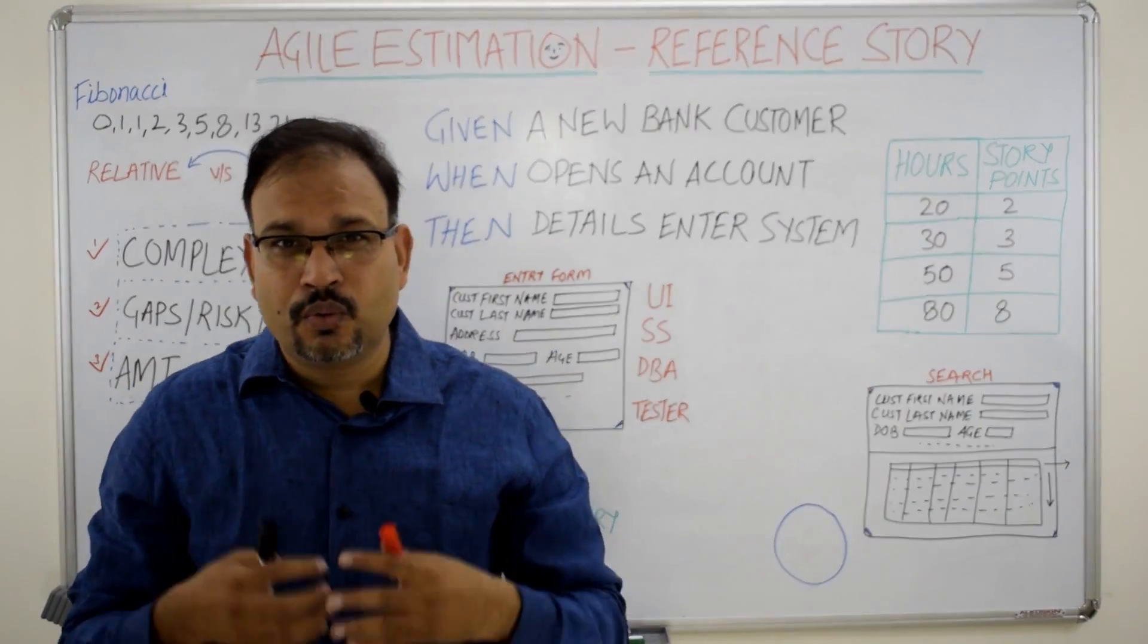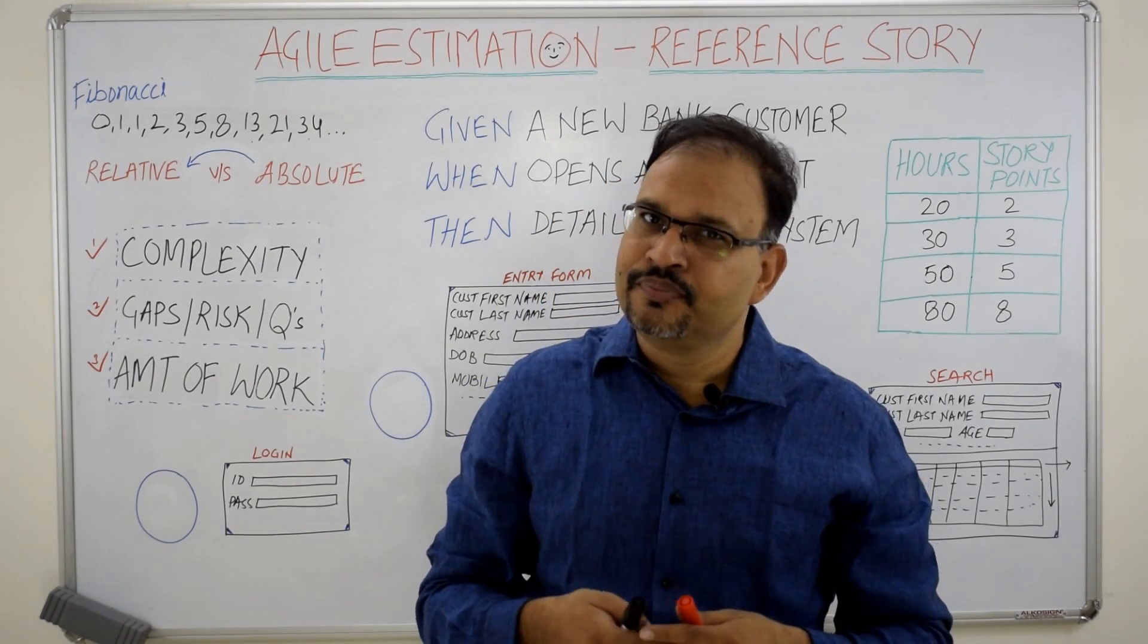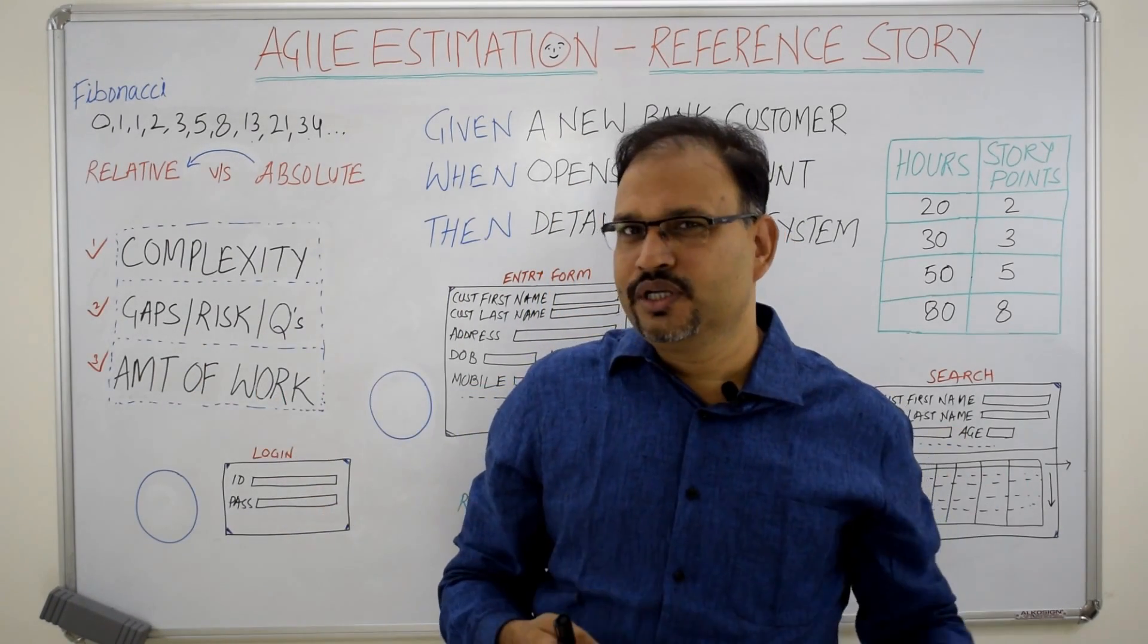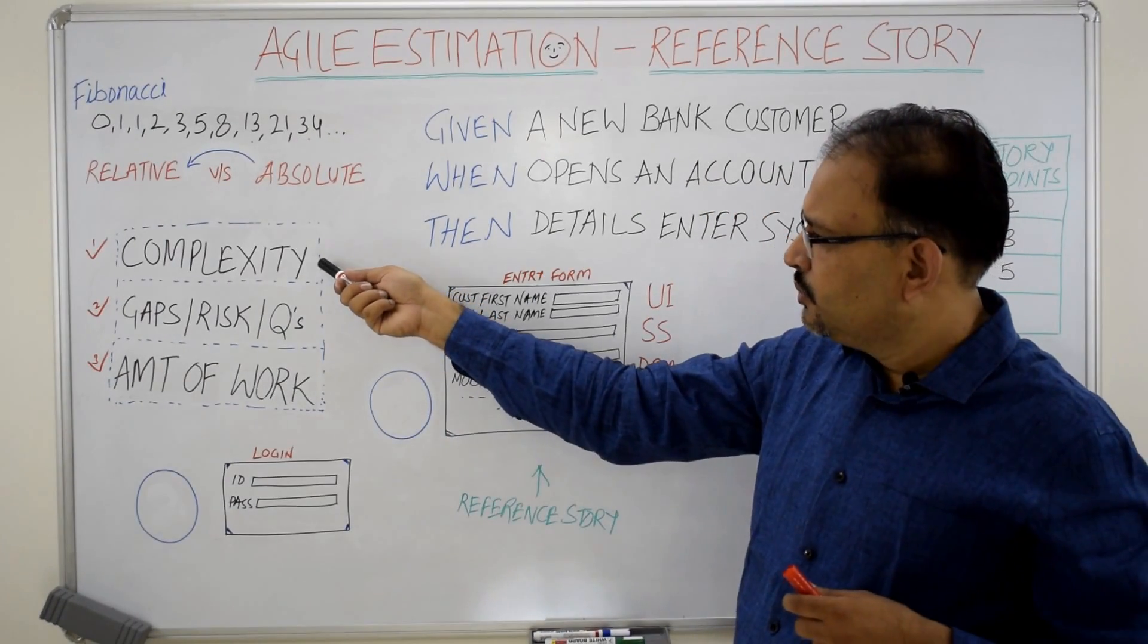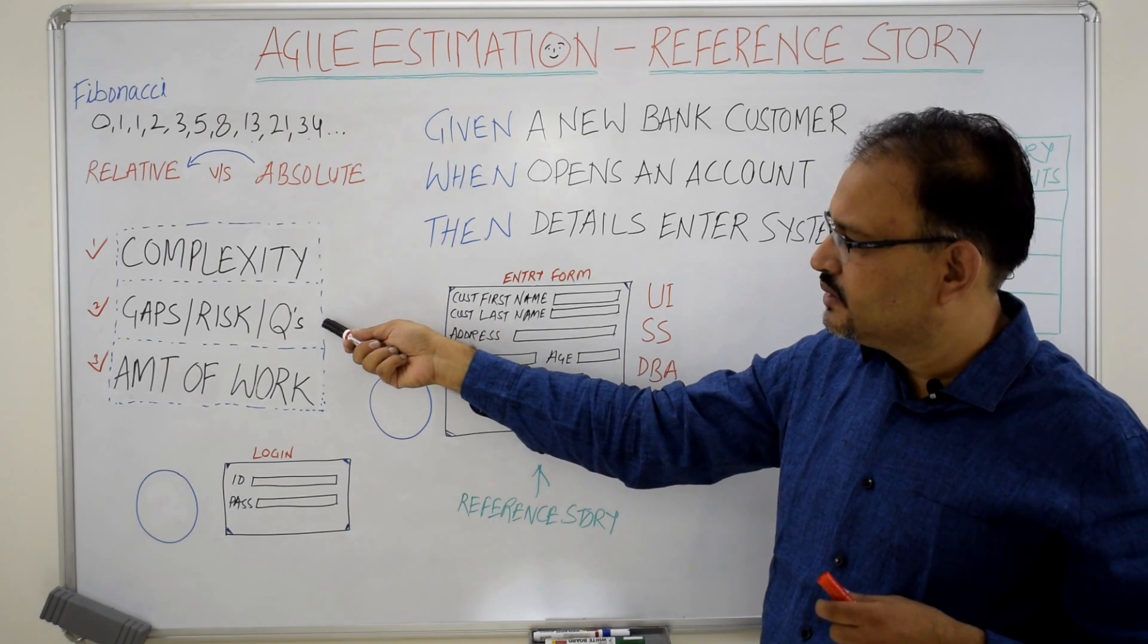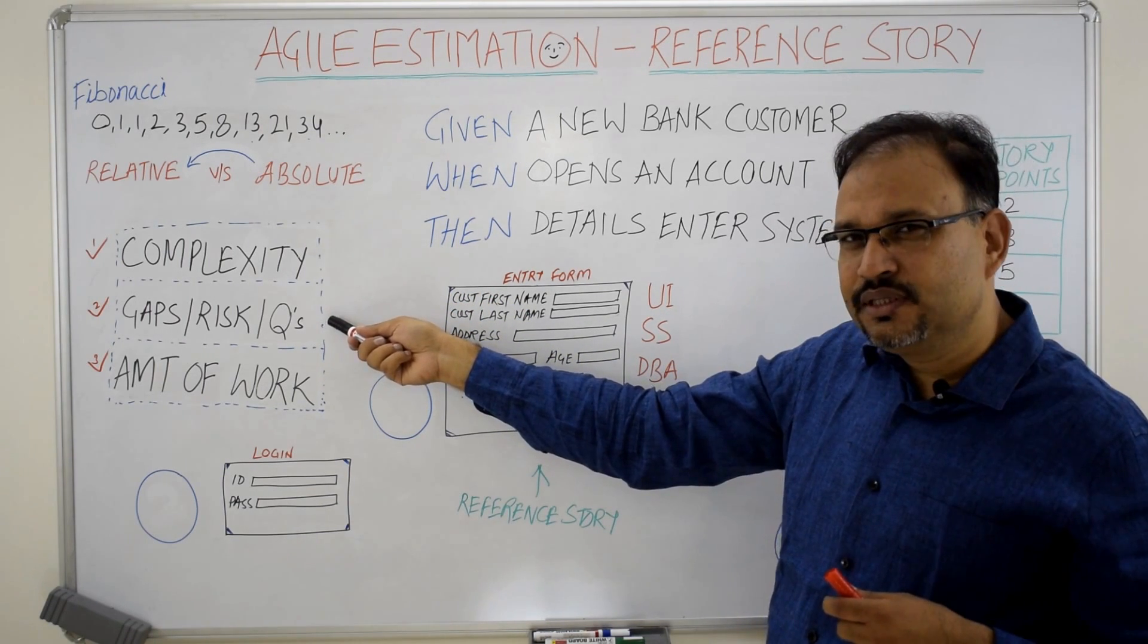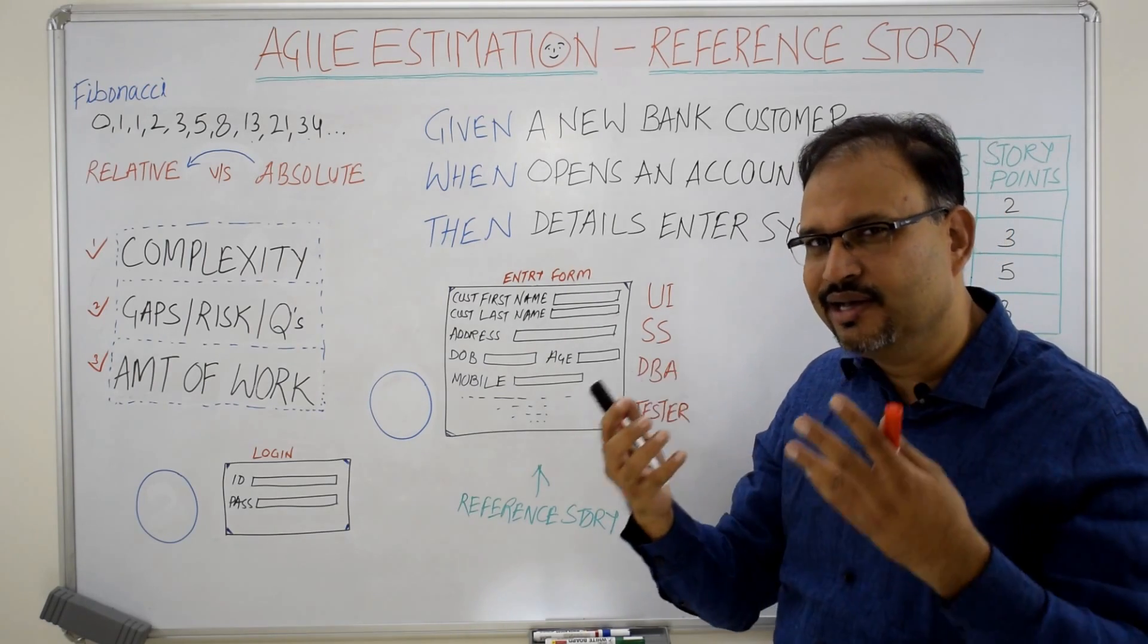Now the question comes what are the criteria based on which a story is assigned a higher story point or a lower story point. There are three criteria. Complexity of the logic and architecture, any gaps, risks, issues, open questions. More open questions, more uncertainty, story is going to attract higher story point.